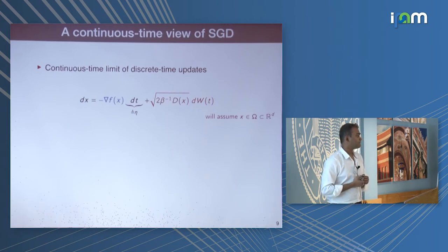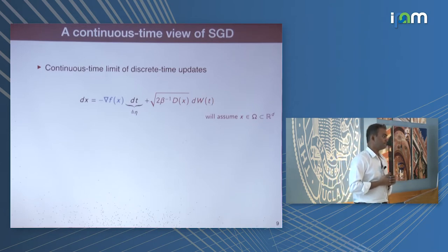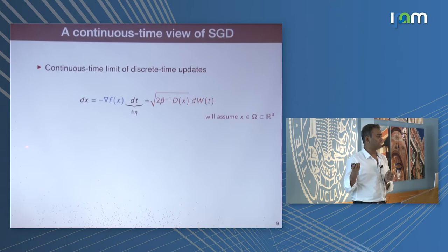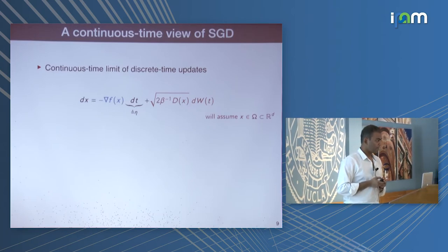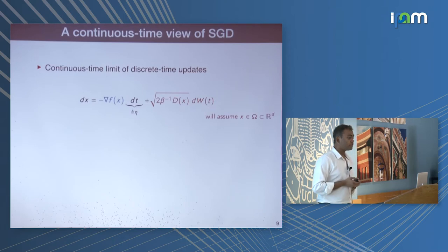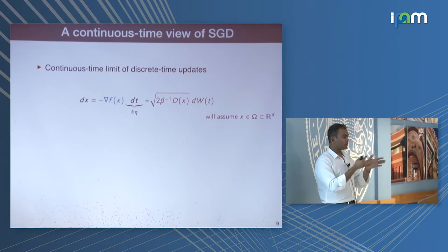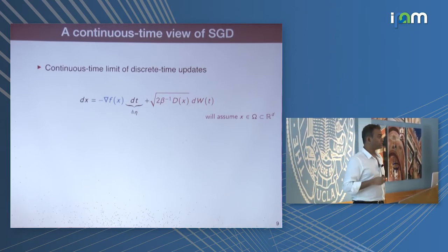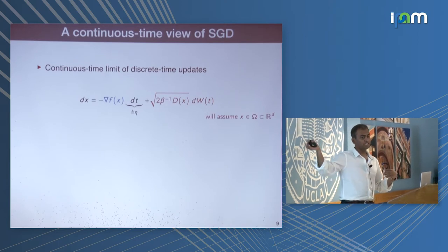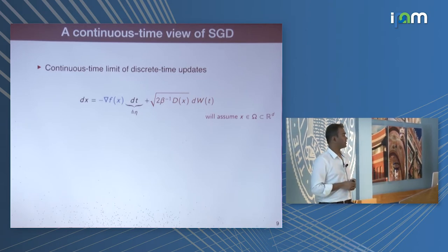The continuous-time SDE is valid for small minibatches — you are leaving aside higher moments; this is about the distribution, not just the batch size. You can show that trajectories of the discrete-time updates are close to trajectories of this continuous-time equation on any test function using weak approximation of stochastic processes. We now study the distribution on weight space that SGD induces — not a single location, but the entire distribution of solutions from any initial condition. This distribution evolves according to the Fokker-Planck equation, where rho_t, the time derivative of the distribution, is the divergence of the gradient flow field plus a diffusion term.